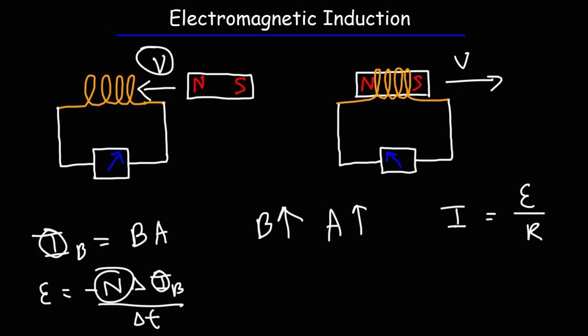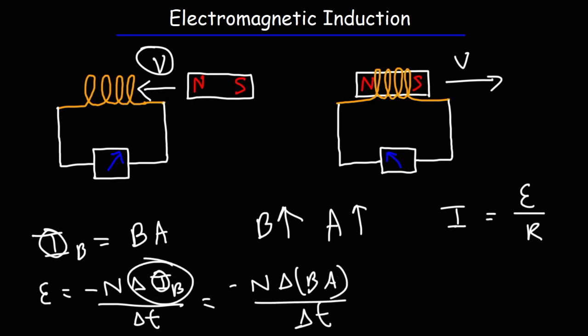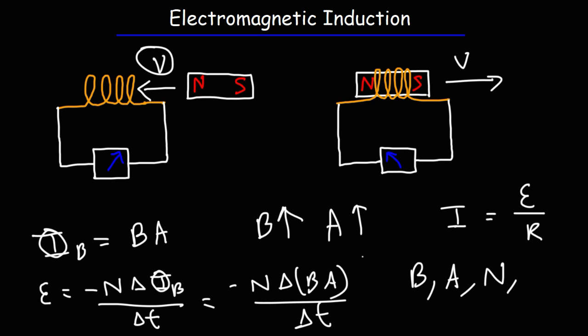The second factor is N, the number of turns. If you increase the number of turns in the coil, you can increase the induced EMF. And because the flux is dependent on the magnetic field and the area — that is, the change in B times A — if you use a stronger magnet, you can increase the rate at which the flux changes as you move the magnet into the coil. Or if you change the area of the coil, you can also change the induced EMF. So those are the four things that affect the induced current: the strength of the magnetic field, the area of the coils, the number of turns in the wire, and the rate at which you move the magnet into the coil.